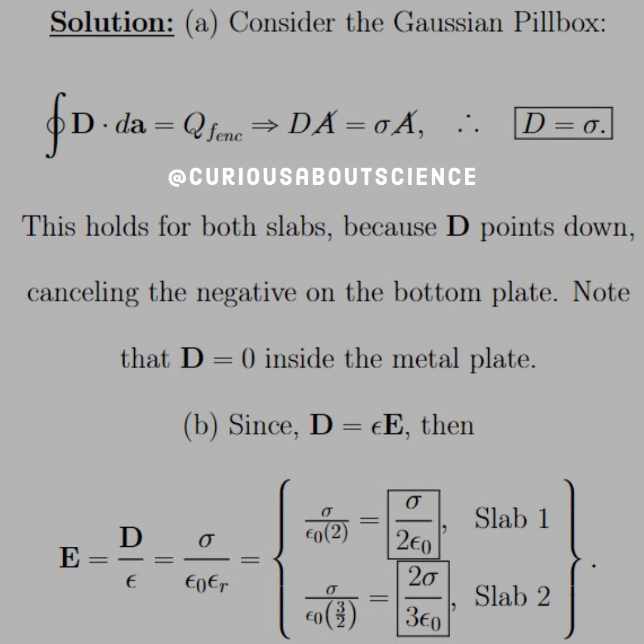All right, so for part A, we can use Gauss' law, where the Gaussian surface is a pillbox. So the closed surface integral equals the Q free and closed, which just yields D times A, which is equal to sigma times A, and the A's cancel, thus leaving us with D equals sigma.